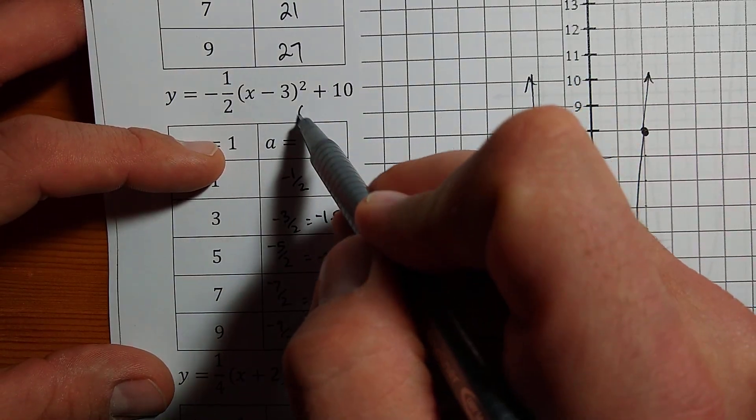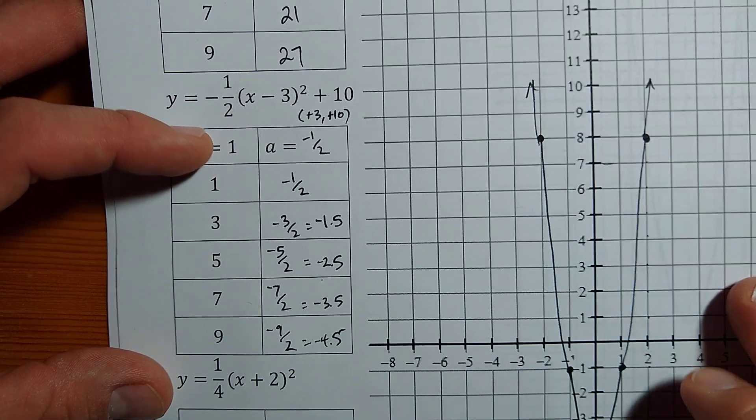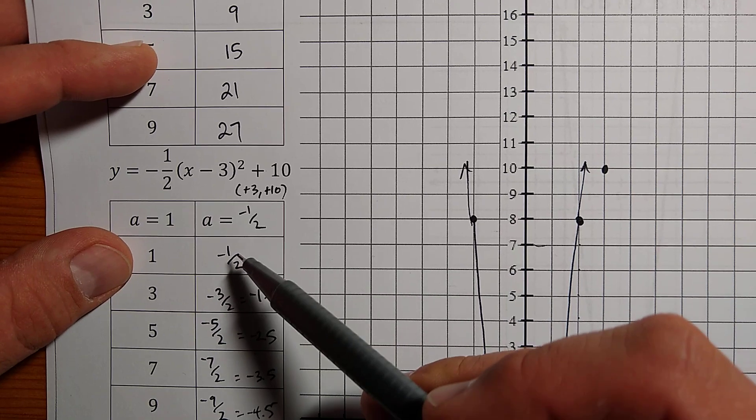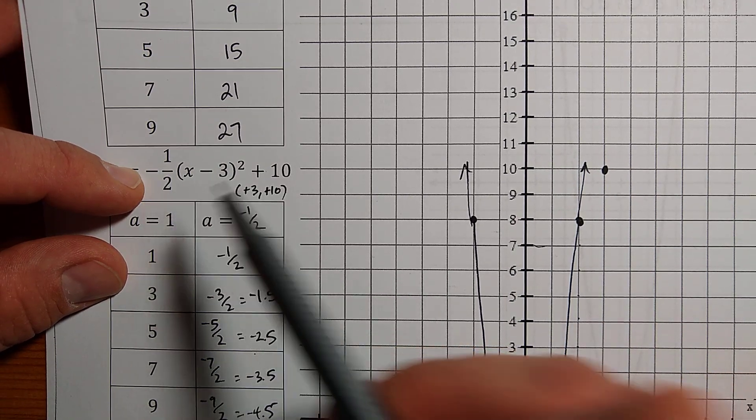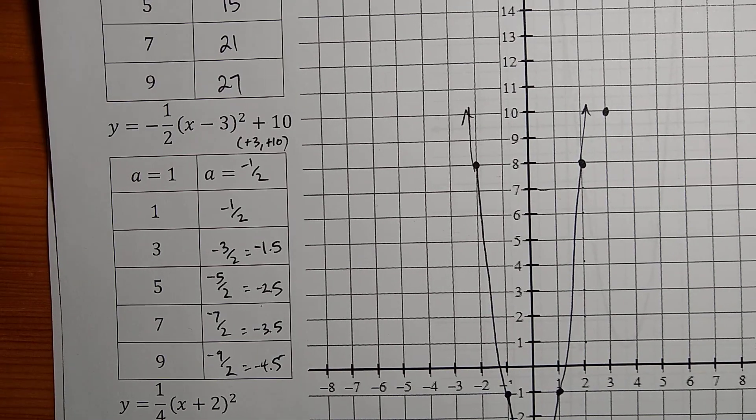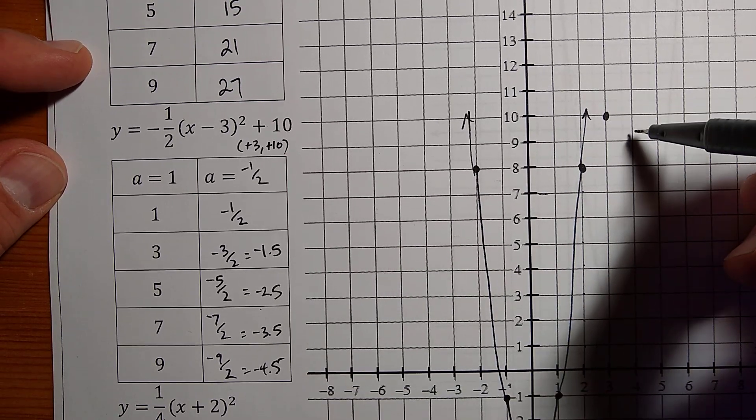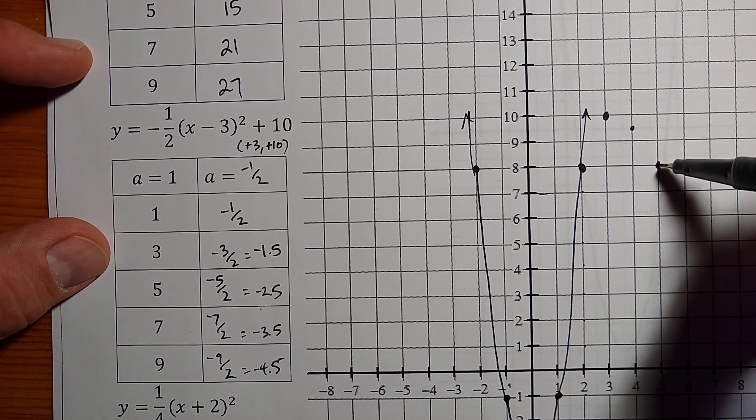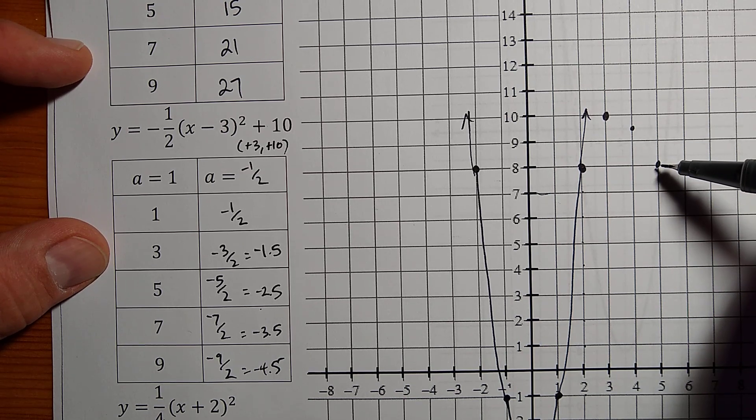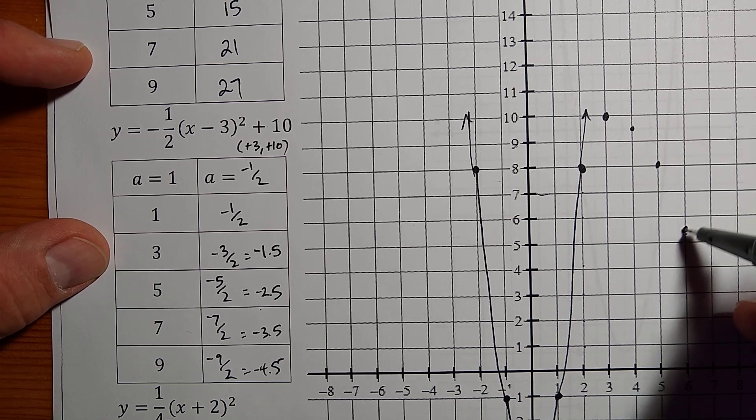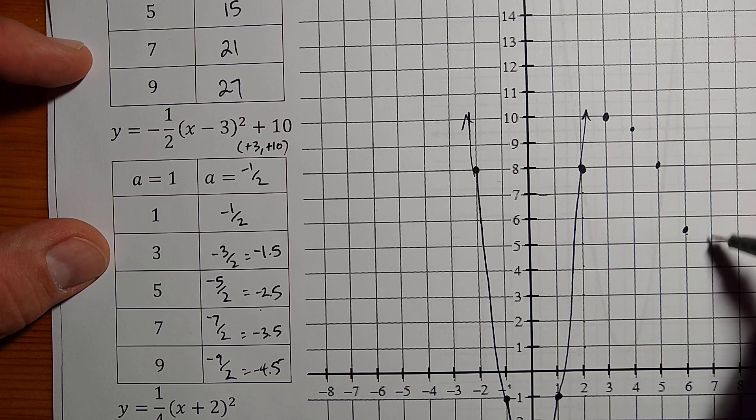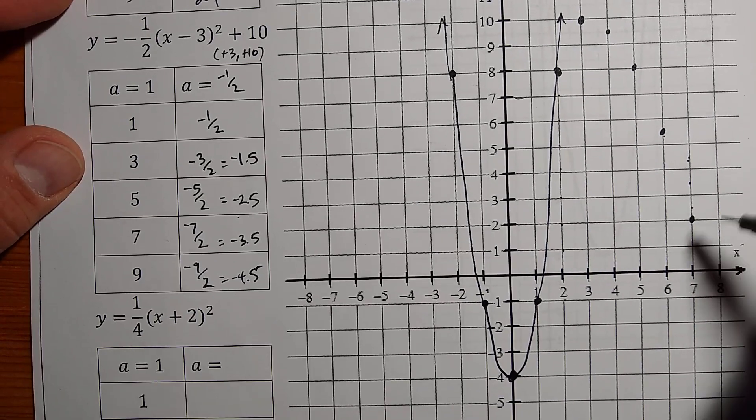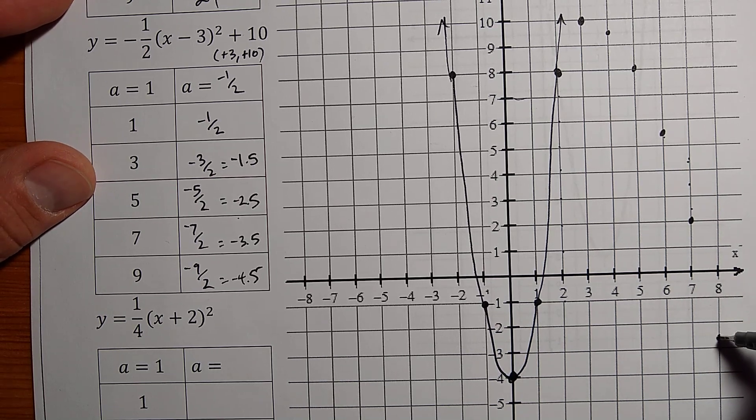Where does this one begin? It begins at the vertex positive 3, positive 10. Okay, let me start with that. Positive 3, positive 10 is here. Now the step pattern, notice that this has been reflected because of that negative right there. And so you'll notice the step pattern, we started with 1, 3, 5 and so on, we ended up with negative values instead. So over 1, down a half. Over 1, down 1.5, so that will be here. Alright, half, one, one and a half. Over 1, down 2.5. And then 3.5, 1, 2, 3.5 is here. And then 4.5, yeah, I can fit that too. Over 1, down 1, 2, 3, 4 and a half.